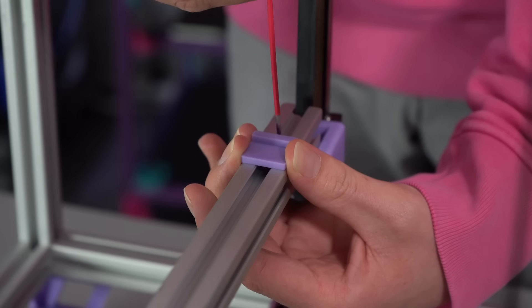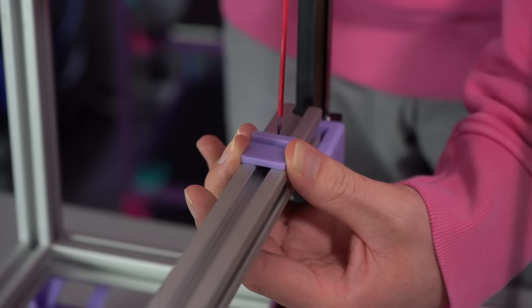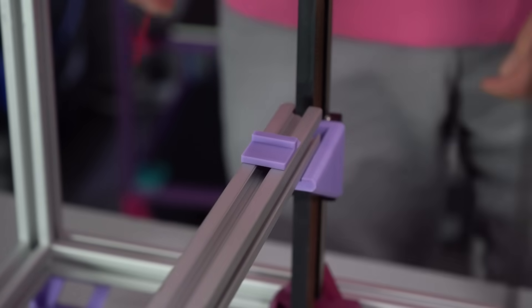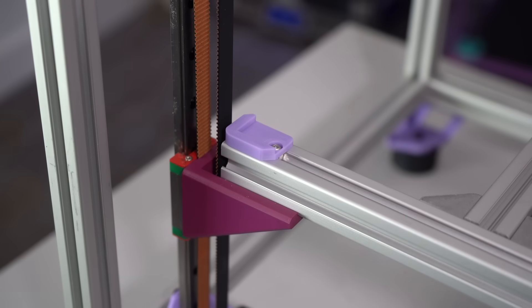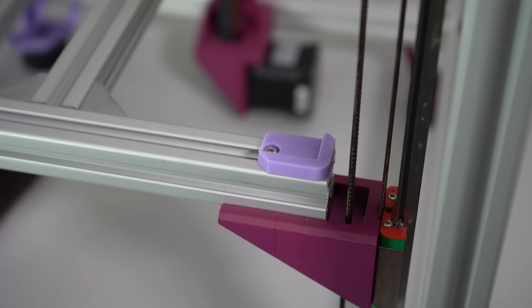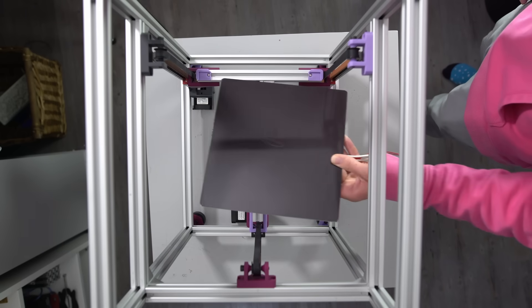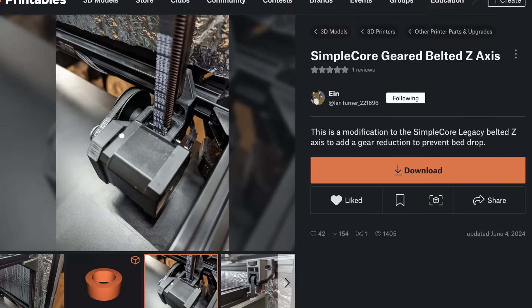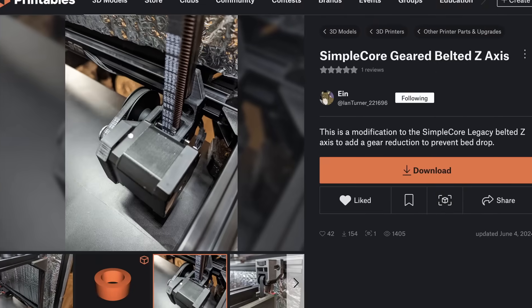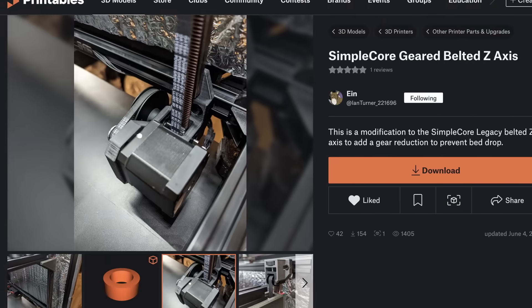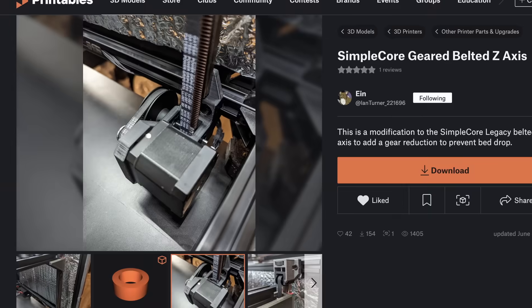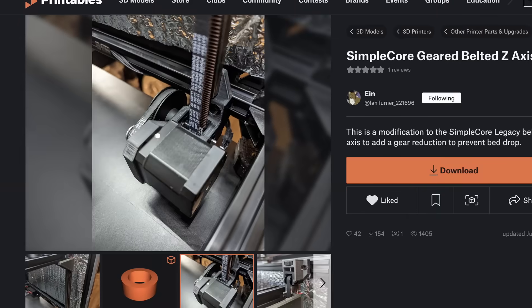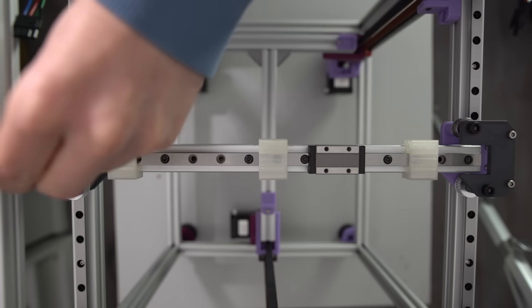This is starting to look a lot more like a proper Z axis. The bed can be attached to the frame with these printed mounts and a bit of VHB tape. I'm not going to be installing it until the end of the build though. This Z system works well for smaller beds, but doesn't handle large heavy beds nearly as well. If you're planning on using a larger bed, I would highly recommend trying out Einz modded Z motor mounts with a 4 to 1 gear reduction. Those should stop your bed from falling. Okay, that's the Z axis finished.